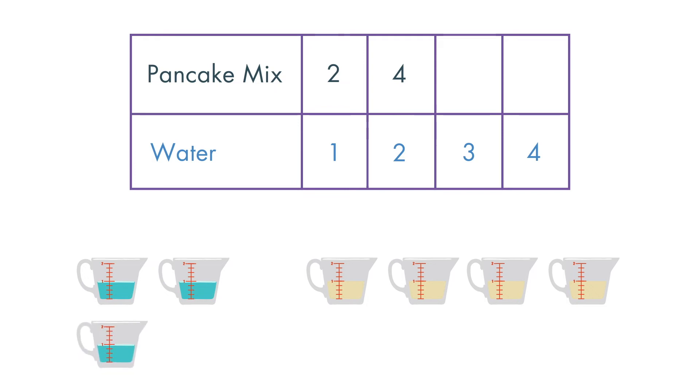3 cups of water will need 2 plus 2 plus 2 cups of pancake mix. That is 6 cups in all.